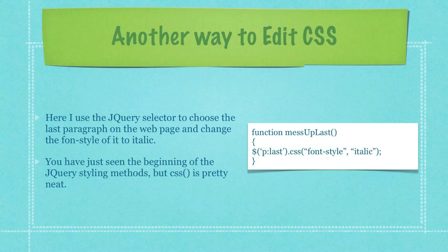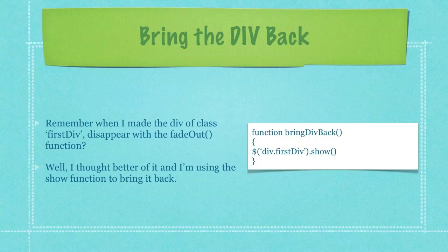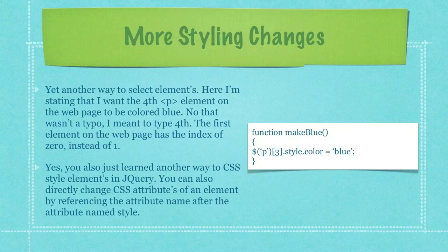You have just seen the beginning of the jQuery styling methods, but I think you'd have to admit that the CSS function is pretty neat. Remember when I made the div of class 'first div' disappear with the fadeOut function? Well, I thought better of it and I'm using the show function in this circumstance to bring it back on screen.